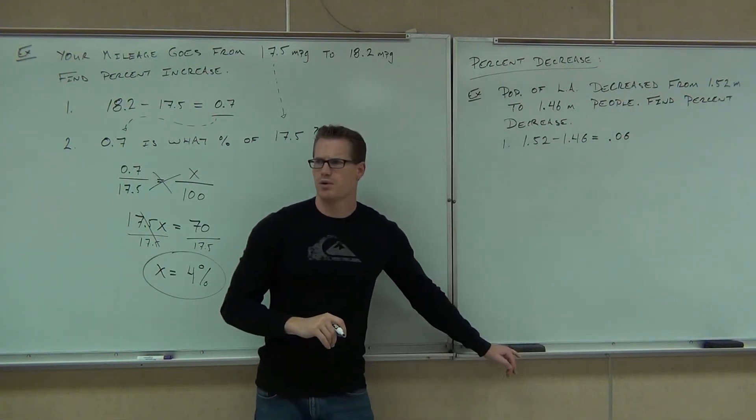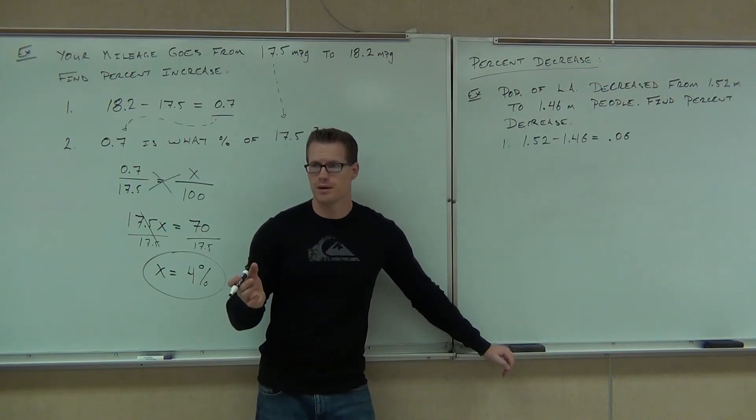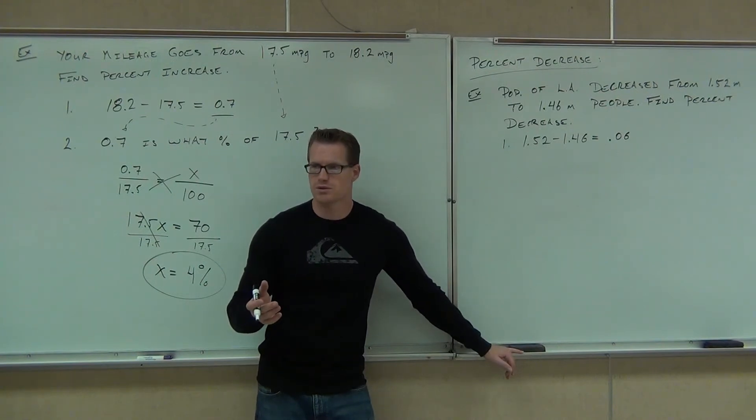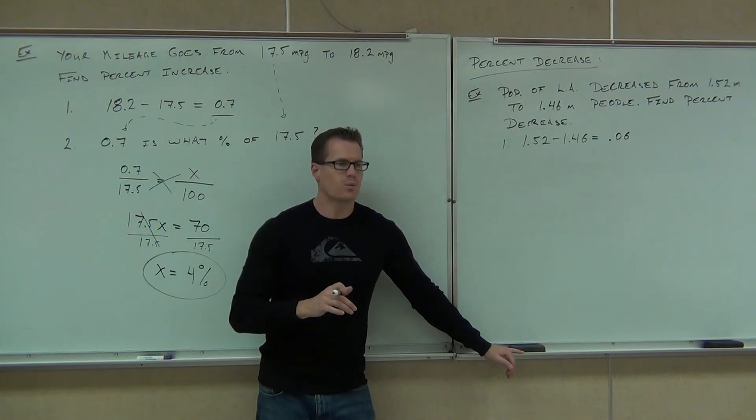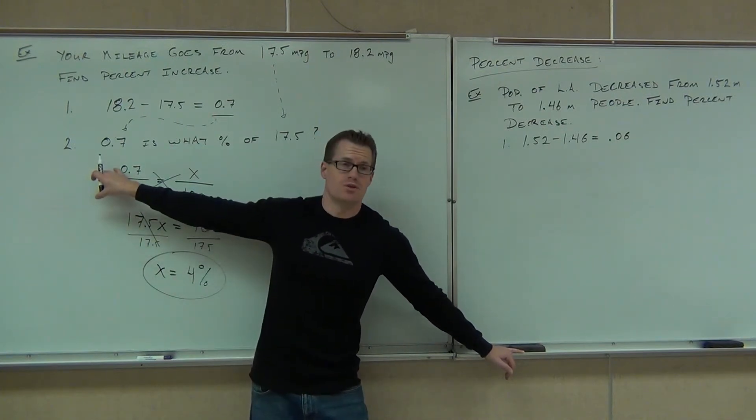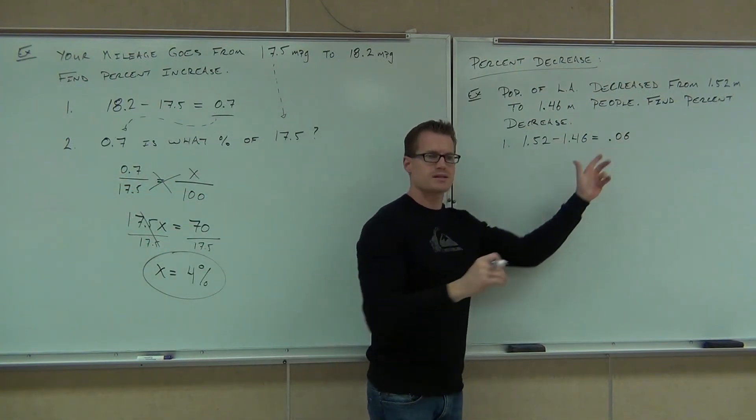You all okay with the 0.06? You sure? So, that's the is, right? That's how much you lost. You lost 0.06 million people. If you want to talk about numbers, 0.06 million people is 60,000 people. There's a lot of people. They left the city. Now, what we want, we don't want 0.06. 0.06 isn't the percent. Okay, 0.06 is numerically how many people they lost. To find the percentage, we've got to do step number two. We've got to relate this number back to what we started with.